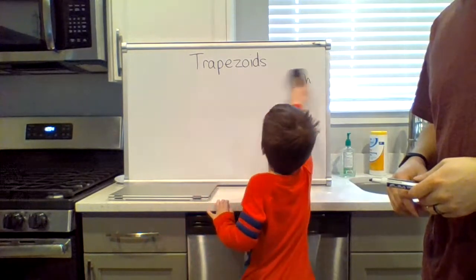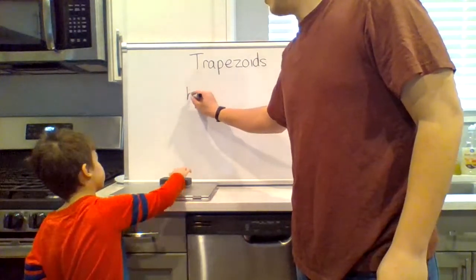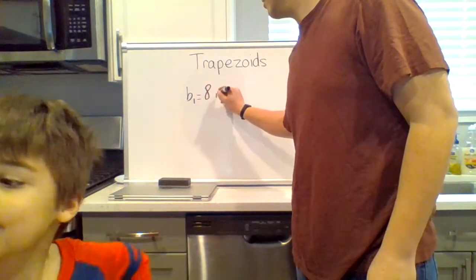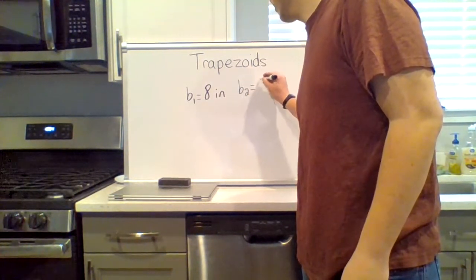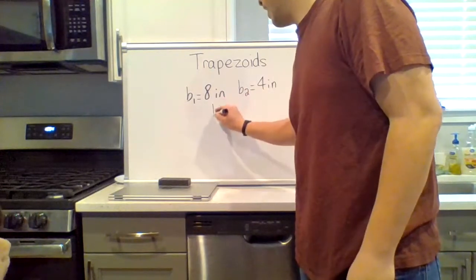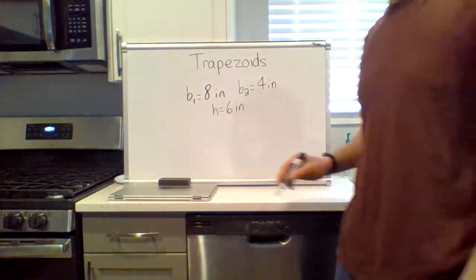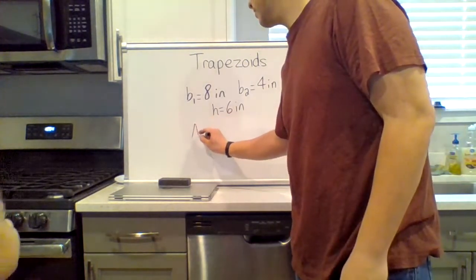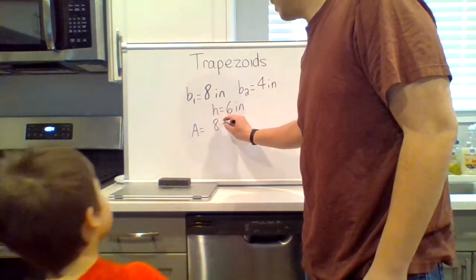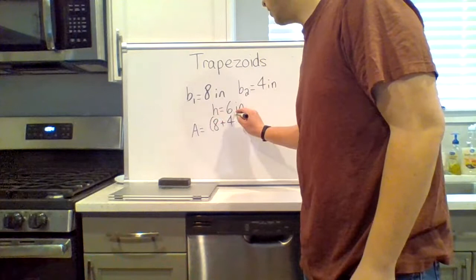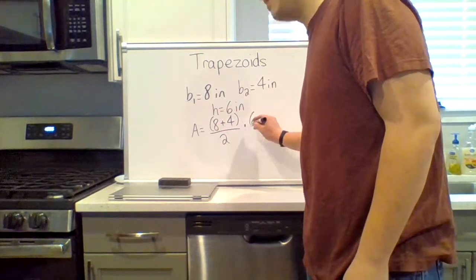So, question: if base one equals eight inches and base two equals four inches and the height is six inches, let's find the area of the shape. So we add the bases, eight plus four, get your handy dandy calculator, and multiply by the height of six.